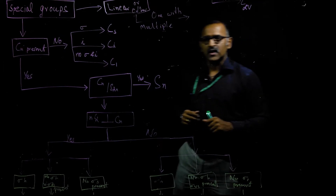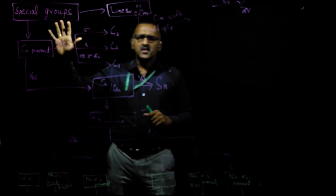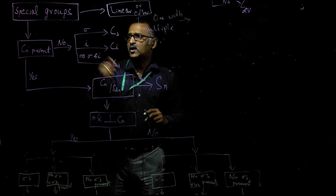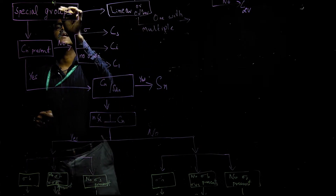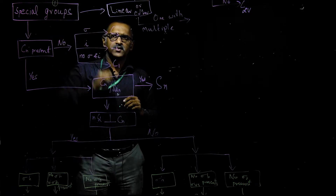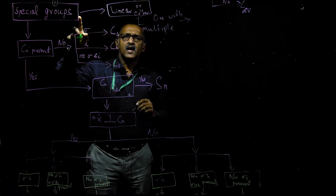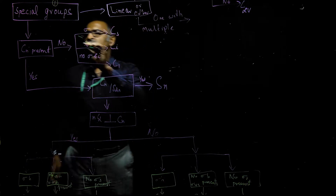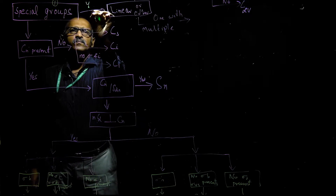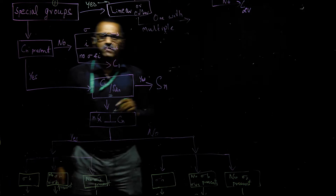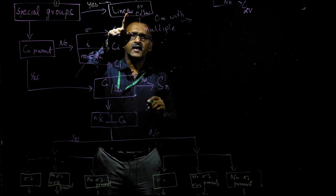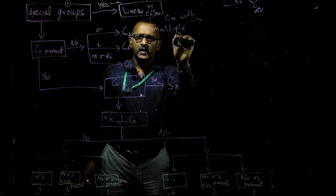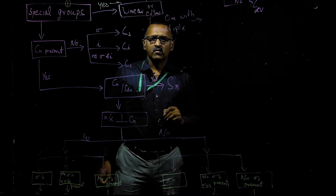This is our flowchart. The first thing we have to check is whether the molecule belongs to a special group. The special group means either it should be linear or have other types of high symmetry. If the answer is yes, we check whether the molecule is linear or belongs to another special type. If it is linear, we go in that direction; if not linear, we go to the multiple-order axis branch.